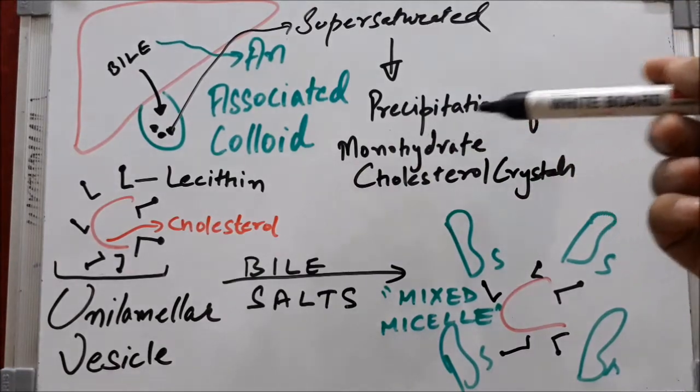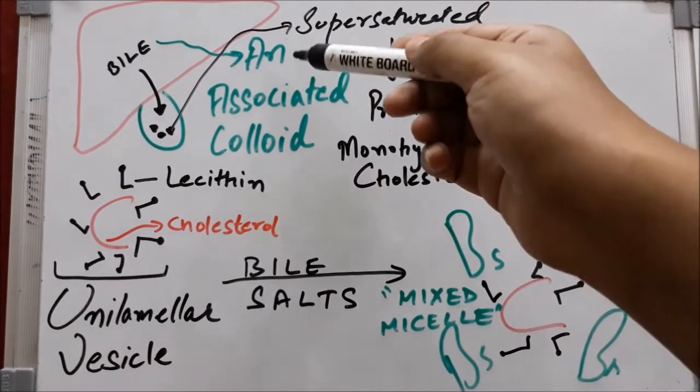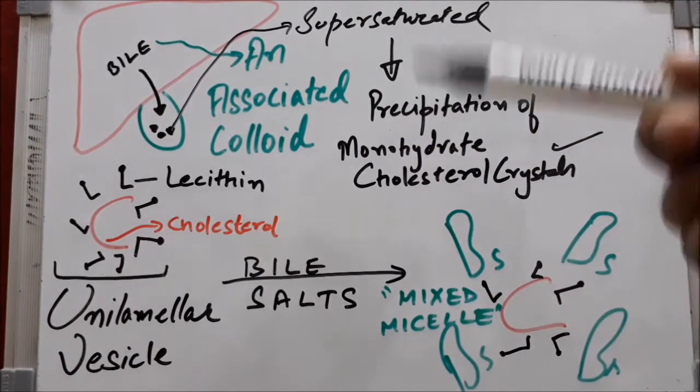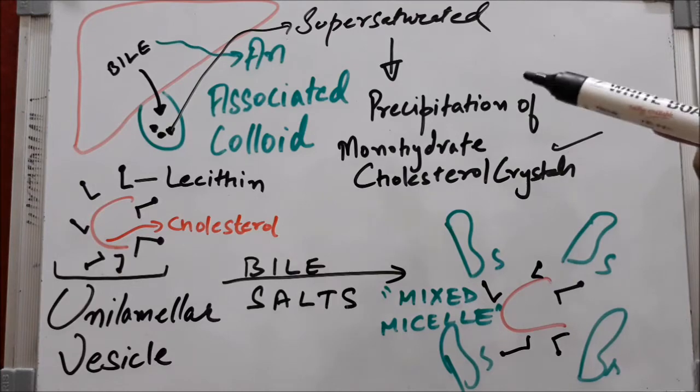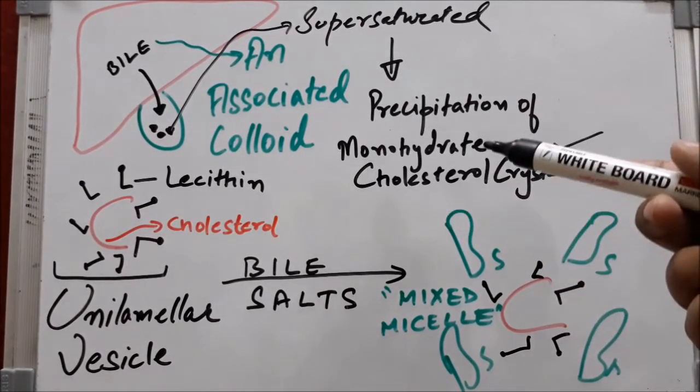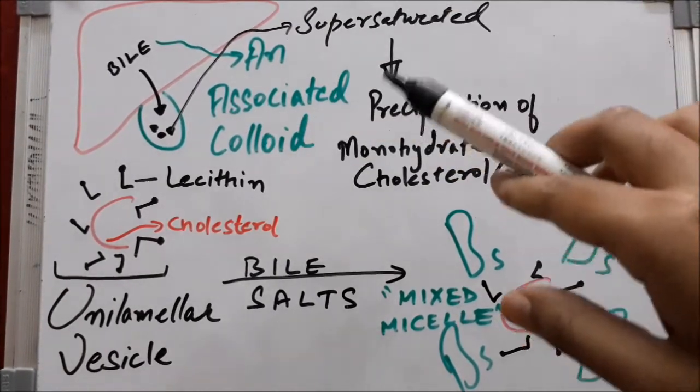It is an associated colloid. If the concentration is above critical micelle concentration (CMC), which is a property of associated colloids, it leads to the precipitation of crystals. We need to know that it is an associated colloid type bile so we can better understand its properties.